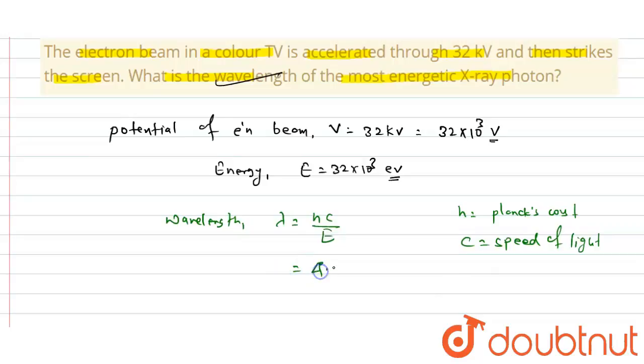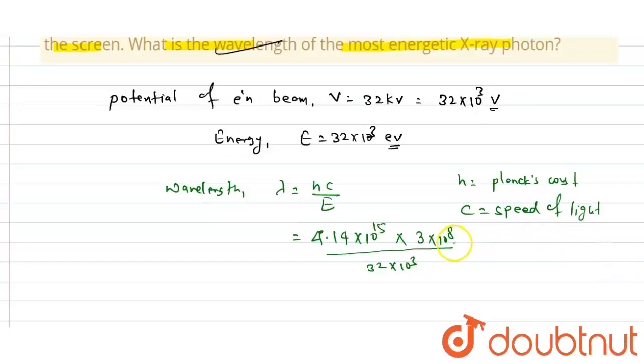We put the value here, that is h is 4.14 × 10¹⁵, multiply speed of light 3 × 10⁸, and energy is here, that is 32 × 10³. The whole is in meter, so convert into nanometer. This is multiplied by 10⁹, as we know that 1 meter equals 10⁹ nanometer.